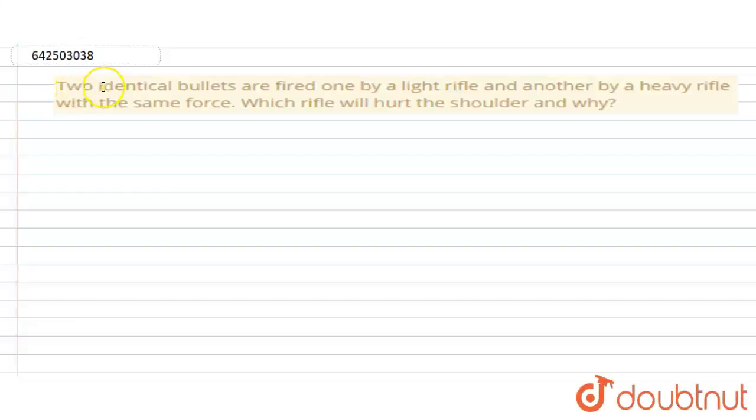Hello everyone, in this question two identical bullets are fired, one by a light rifle and another by a heavy rifle with the same force. Which rifle will hurt the soldier and why?